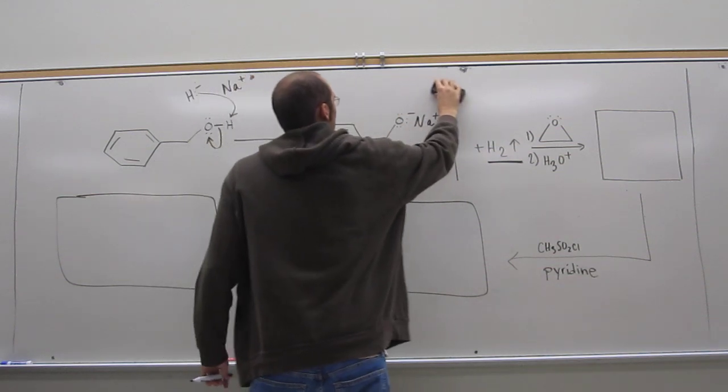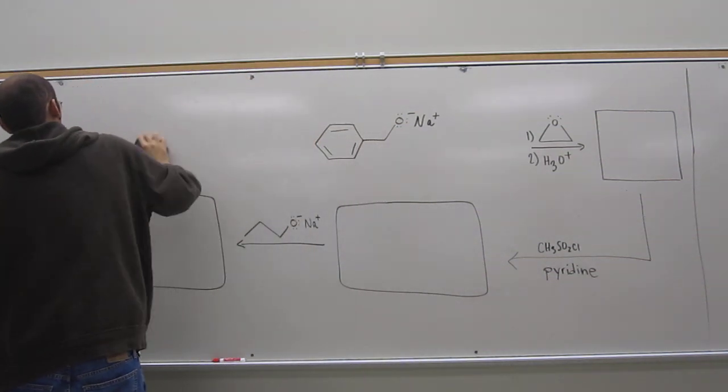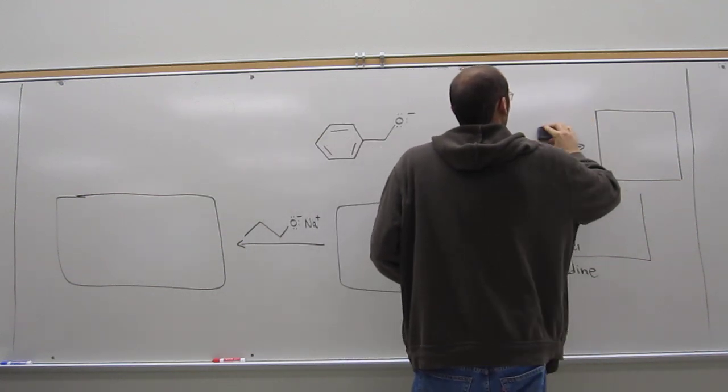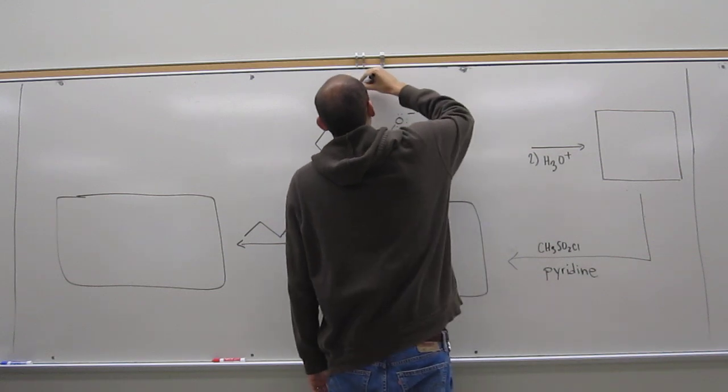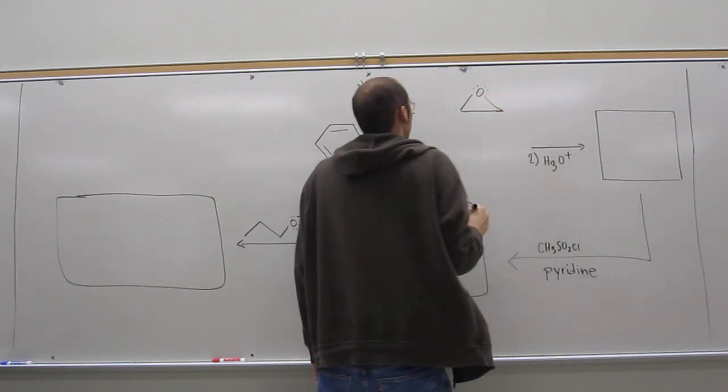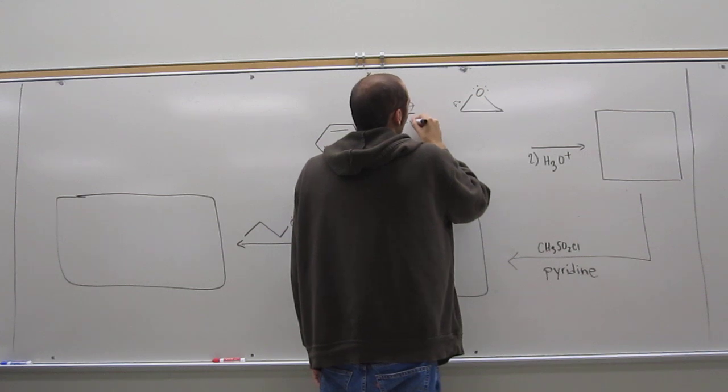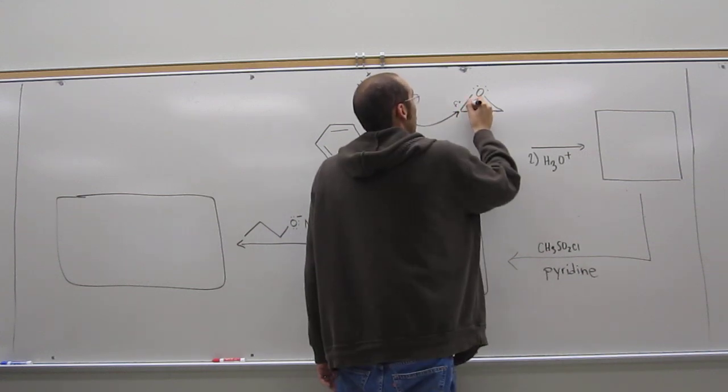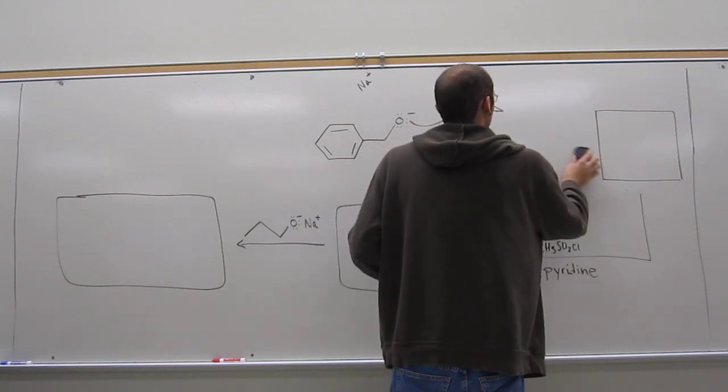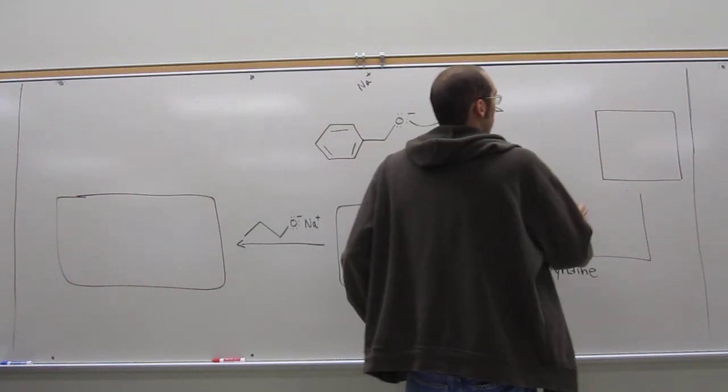Can I erase this first part so I can put the mechanism of that over there? So again, this wouldn't be a mechanism type problem, but for me it's easier to think about things mechanistically. The spectator ion floats away. So we've got this oxide.